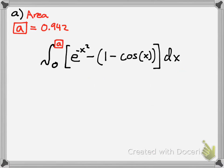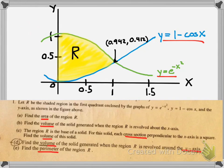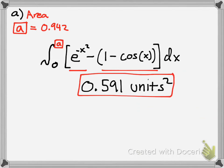So we take the top function, which is e to the negative x squared, minus the bottom function, and integrate from 0 to A — integrating from 0 to that intersection point and adding up the area. Once you put that in your calculator, you get 0.591 units squared. That is the answer to Part A, finding the area of region R.